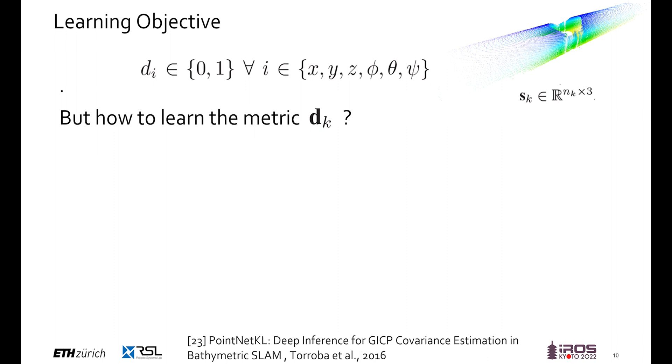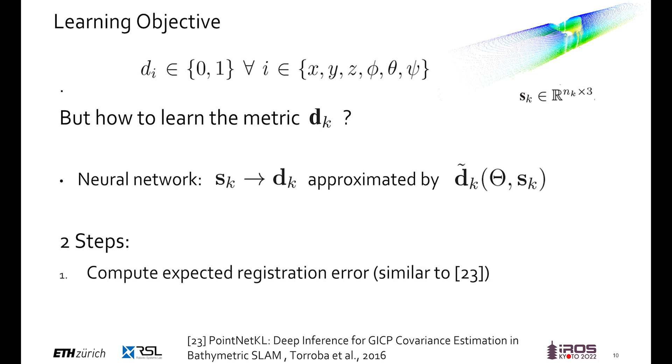So, how can this metric be learned? For this, we deploy a neural network that approximates the mapping from a single scan to the localizability metric dk. To actually generate ground truth values for this metric, two steps are required. First, for each scan an expected registration error needs to be computed. In a second step, this registration error can be mapped to the desired metric and used as a label during training.